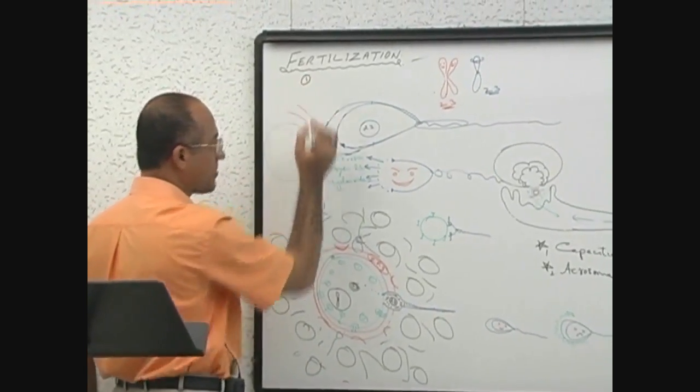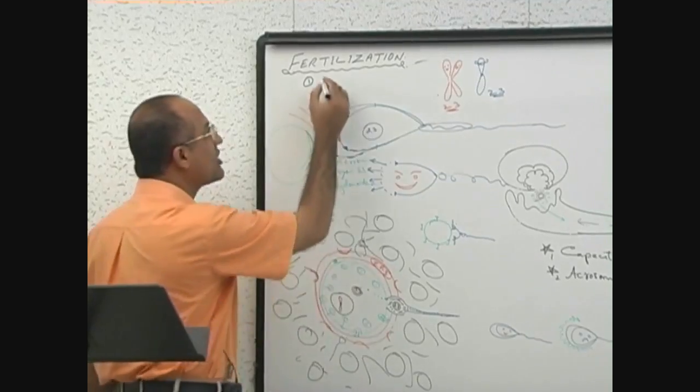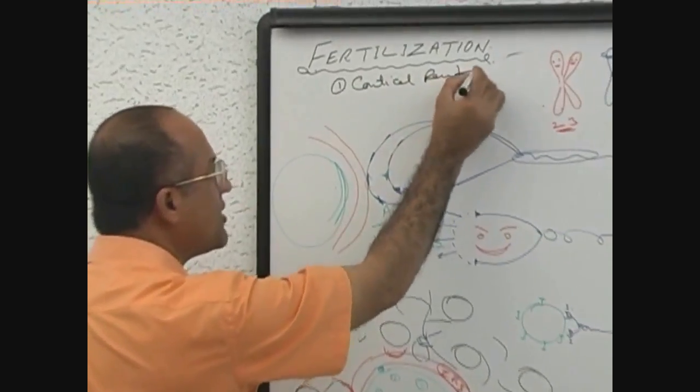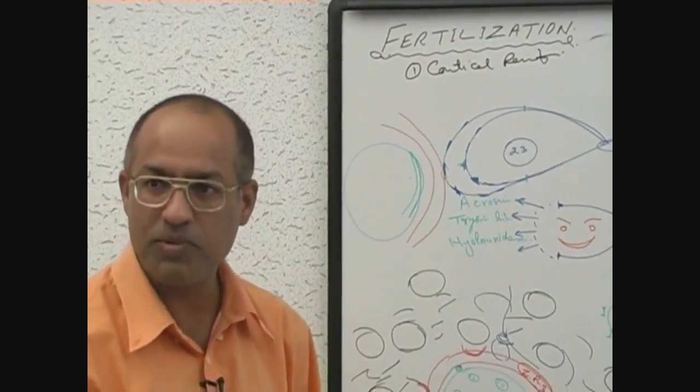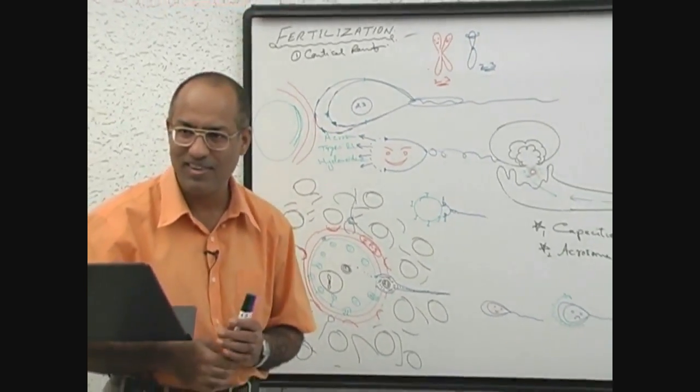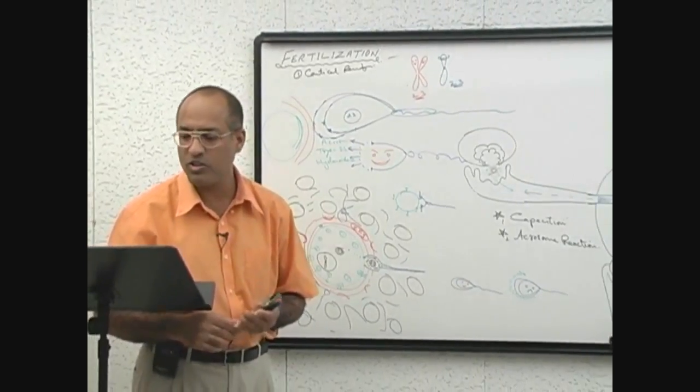Number 1 was cortical and zonar reaction. Cortical reaction we have discussed in detail already. You know the first purpose should be what? All the windows, all remaining windows should be shut down, right? So this is 1.